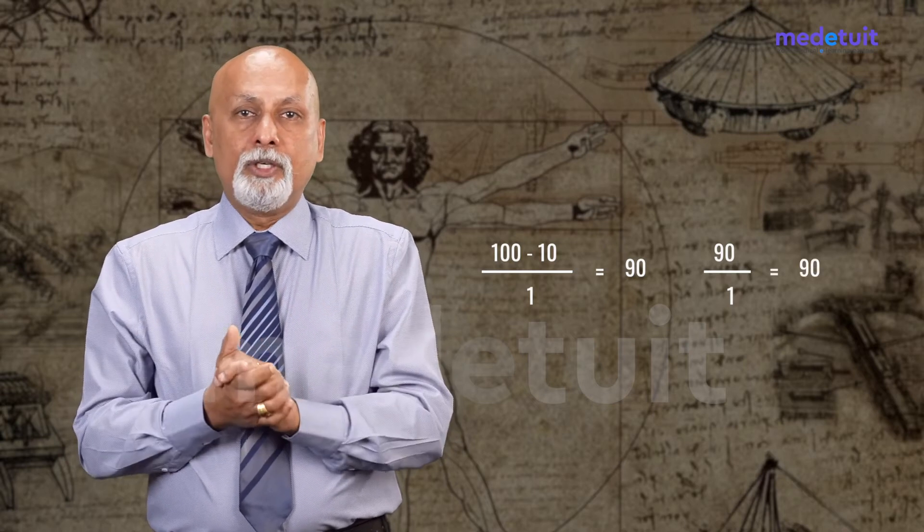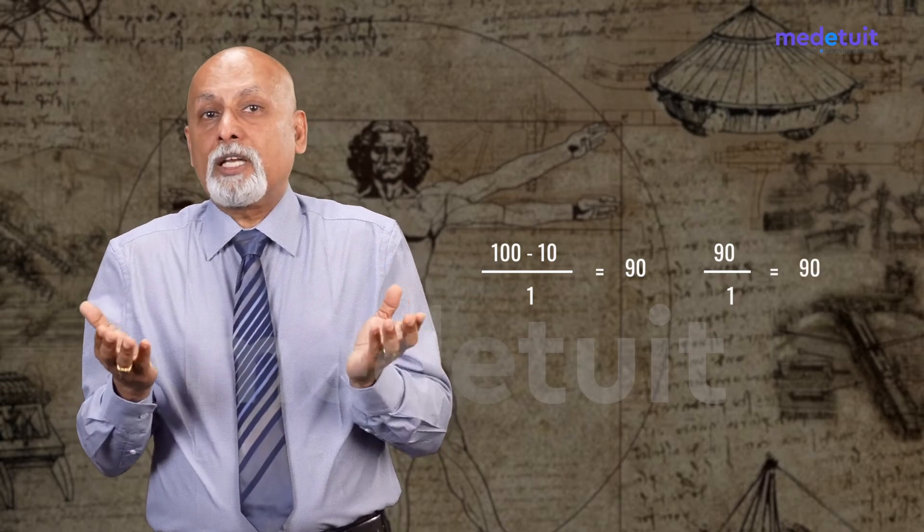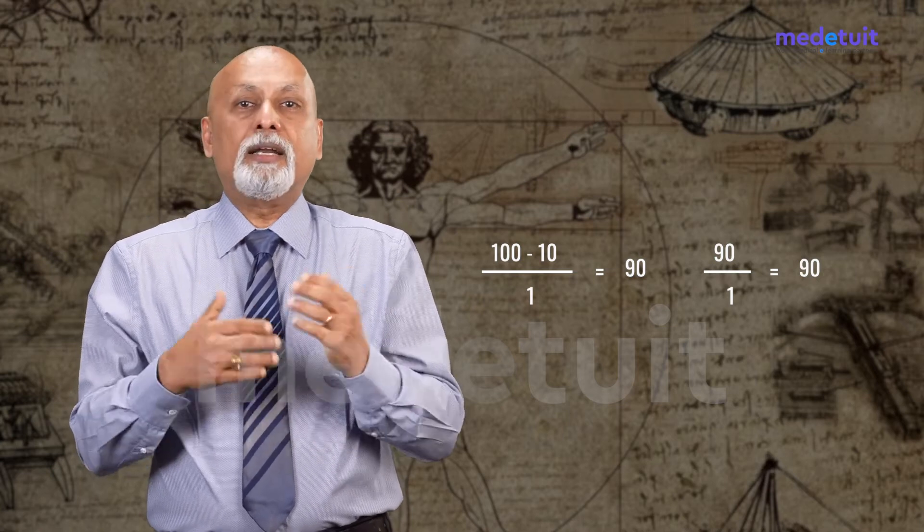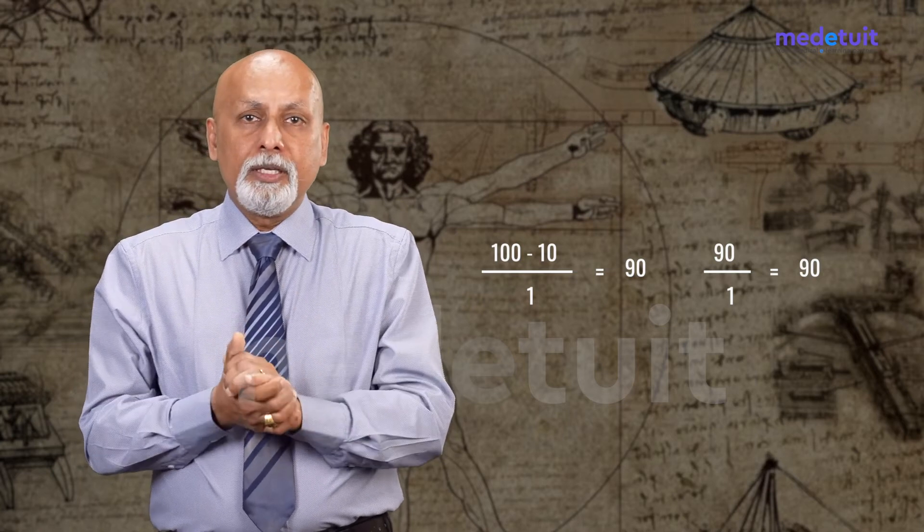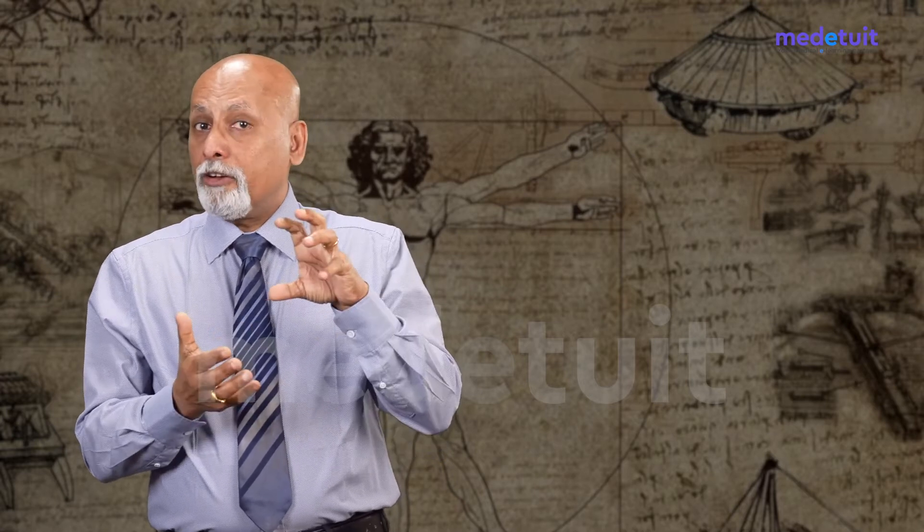So 90 divided by 1 is 90 — meaning 90 students are occupying that room. This is nothing but the indicator dilution method. Instead of a bunch of coins, we introduce an indicator which is most suitable for that compartment. The criteria for these indicators will be explained in the later part of the session.